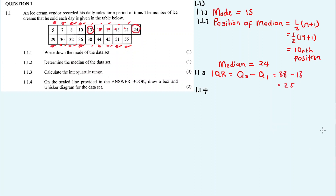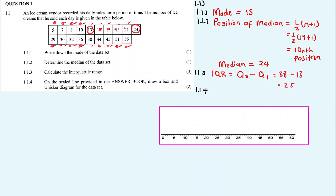1.1.4: on the scale line provided in the answer book, draw a box and whisker diagram for the data set. So we draw a box and whisker diagram using the five number summary: minimum, Q1, Q2 (median), Q3, and maximum.